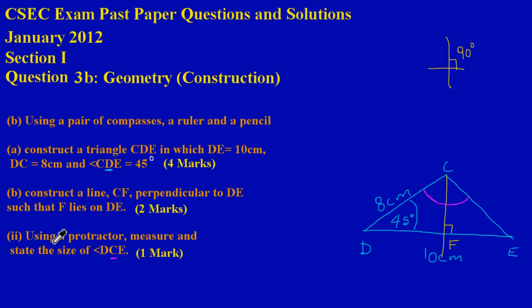After that, they're asking us to use a protractor to measure and state the size of angle DCE. Notice C is in the middle, so the angle is formed at point C. I've colour-coded that angle in red on the diagram. That's the angle we're going to measure.